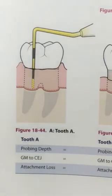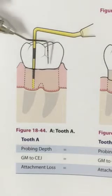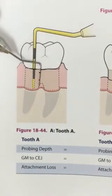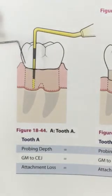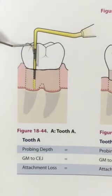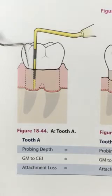To determine clinical attachment loss, we are looking from the CEJ to the epithelial attachment. If the gingival margin is at the CEJ, then the clinical attachment loss is equal to the probing depth.